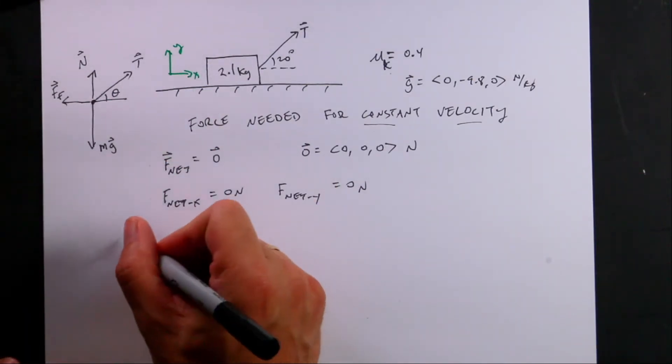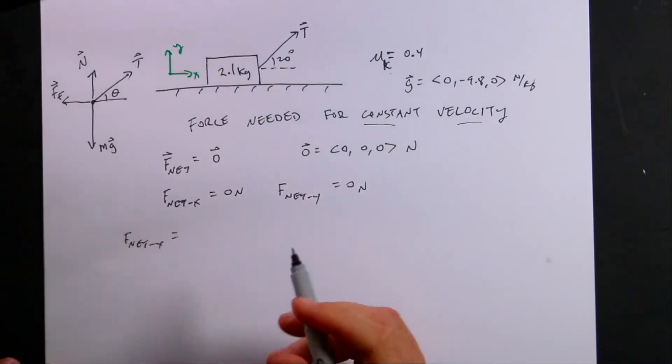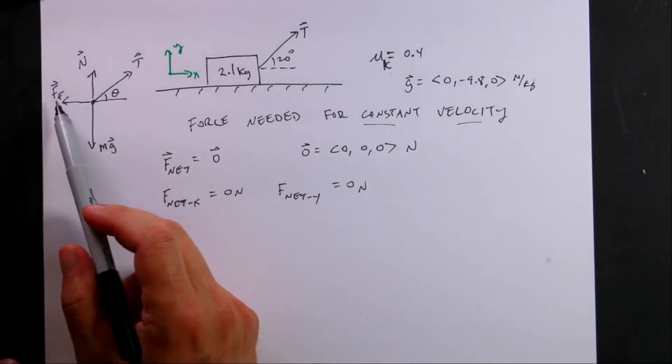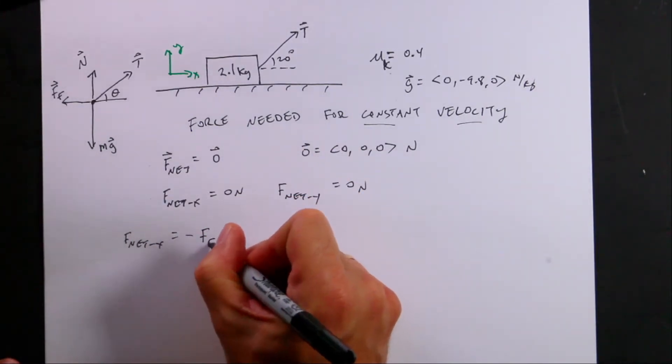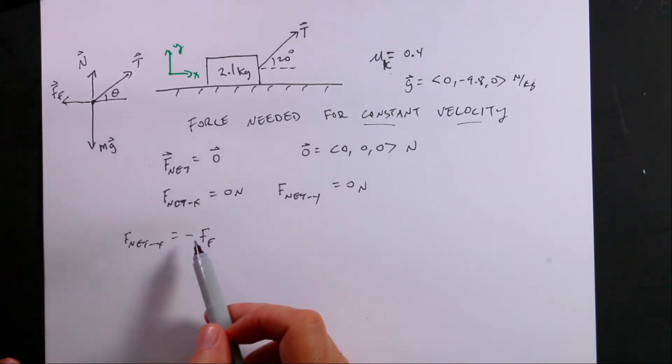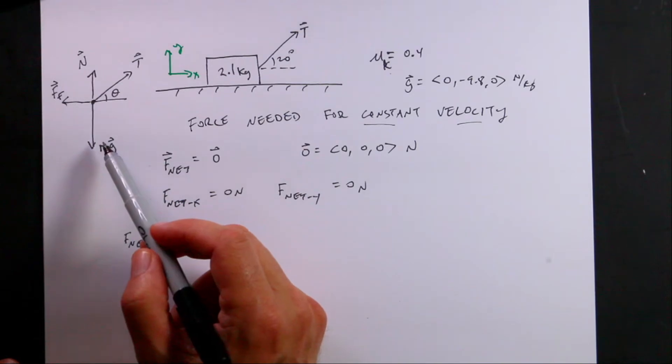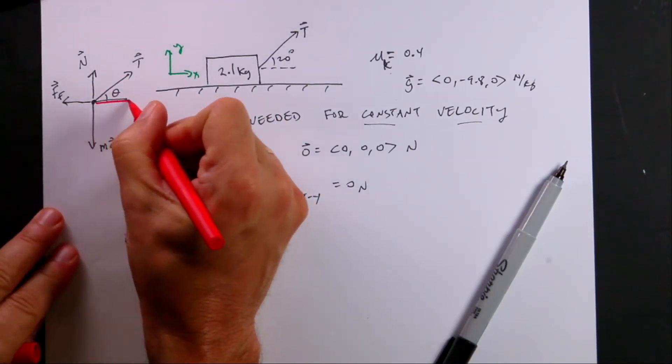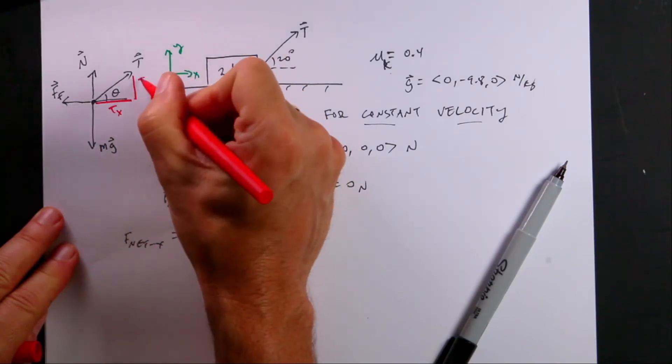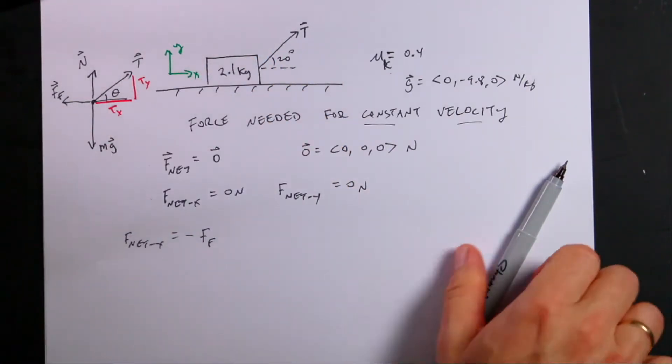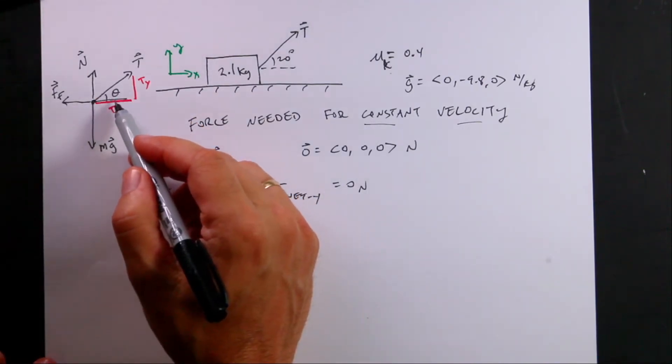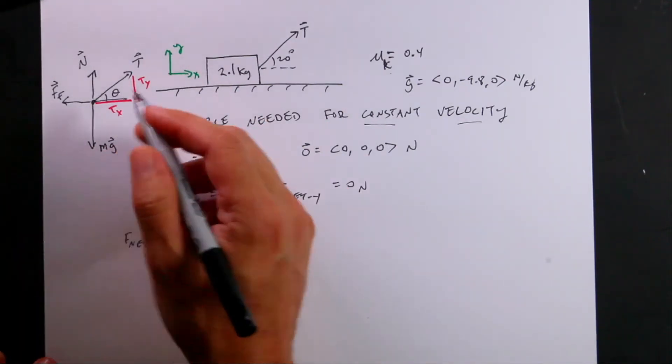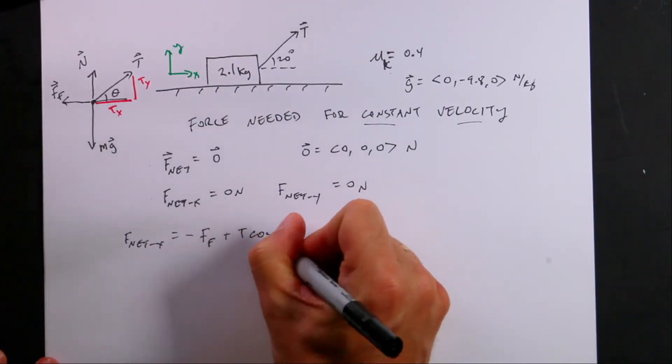So let's look at f net x. So what forces act in the x direction? Well, I have this friction force right here in the x direction. So what's the x component of this friction force? Well, it's in the negative x direction. So I'm going to write negative f f. It's not a vector. This is the x component of the friction force. Normal force is not in the x direction. The gravitation force is not in the x direction. Part of the tension force is though. So if you look at this, this is Tx and this is Ty. And I make a right triangle. So since that's a right triangle, I can say the cosine of theta is going to be Tx over the magnitude of T, which I'll just call T. So the x component is going to be equal to T cosine theta.